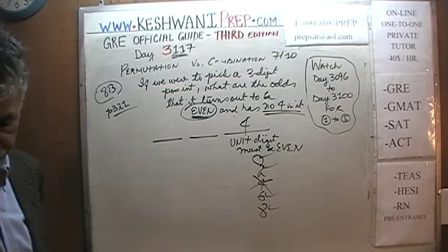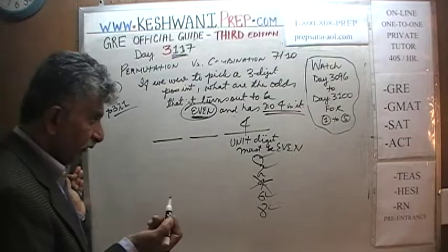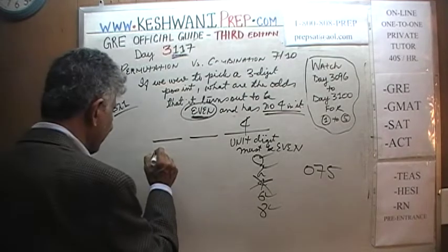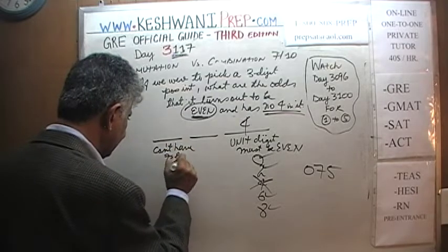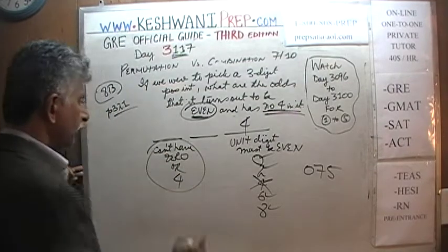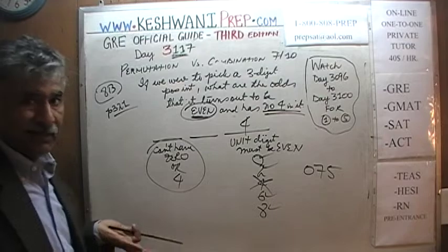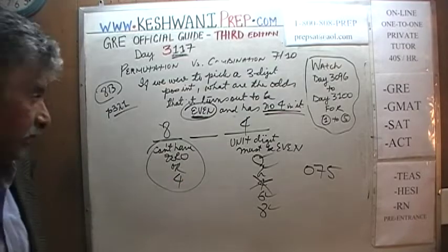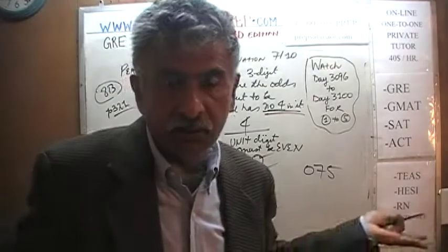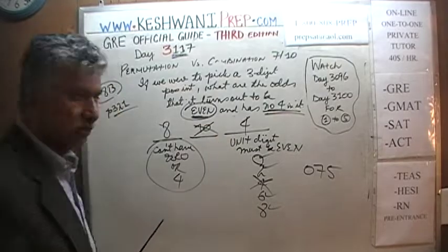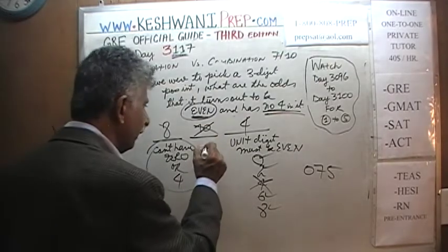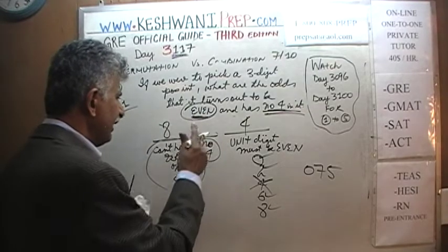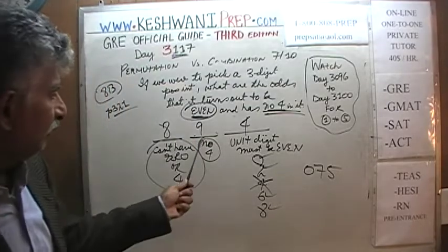Now let's work on the hundreds digit. If it's a three-digit number, we can't have zero here — that would make it a two-digit integer. And we can't have four anywhere. So we can't have zero and we can't have four, which leaves only eight choices. For the middle digit, there are ten digits, but we have to pay attention — we can't have four. So we only have nine choices. We can put any of the nine digits there as long as we don't put a four.